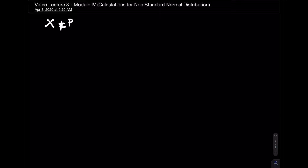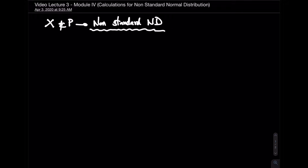When drawing a non-standard normal distribution, we're dealing with problems in terms of x's — these are application problems. The z's are standard values where you just find a probability that z is less than or greater than a value. But x's are live examples like IQ, GPAs, body temperatures, and things of that sort.